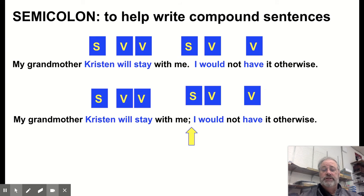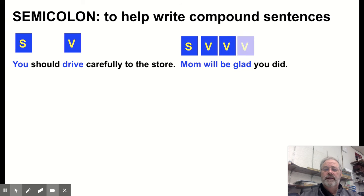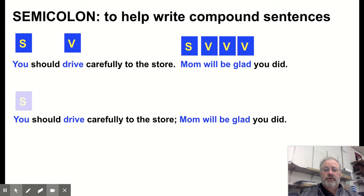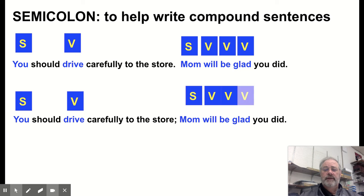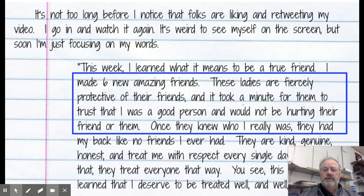You could also put a comma with a coordinating conjunction there — the semicolon is just another way of expressing and connecting a thought, perhaps explaining the first part of the sentence. A second example: 'You should drive carefully to the store; Mom will be glad you did.' You have subjects and verbs on each side, forming two independent clauses connected by a semicolon.